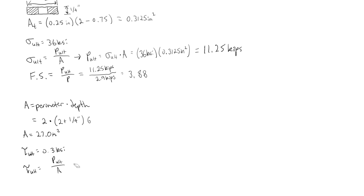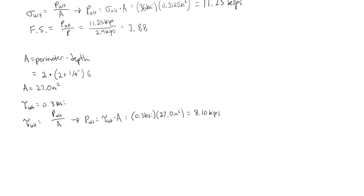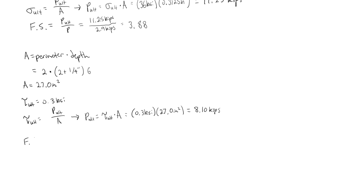Rearranging to solve for P ultimate gives P ultimate equal to the ultimate shearing stress times A, which is 0.3 ksi times 27.0 inches squared. Solving that gives 8.10 kips. Using the factor of safety formula, P ultimate over P, we have 8.10 kips divided by 2.9 kips, giving a factor of safety of 2.79.